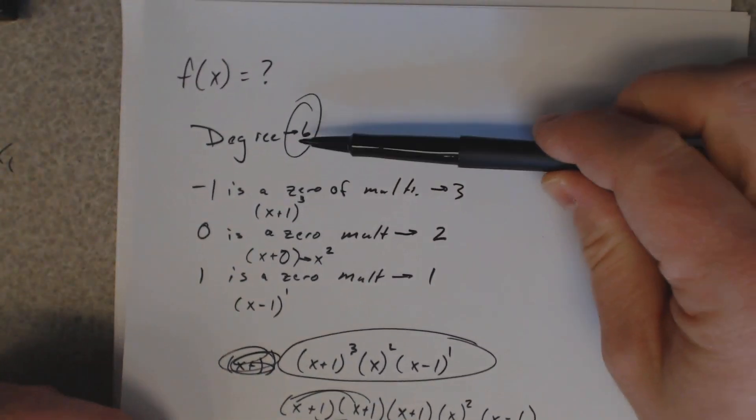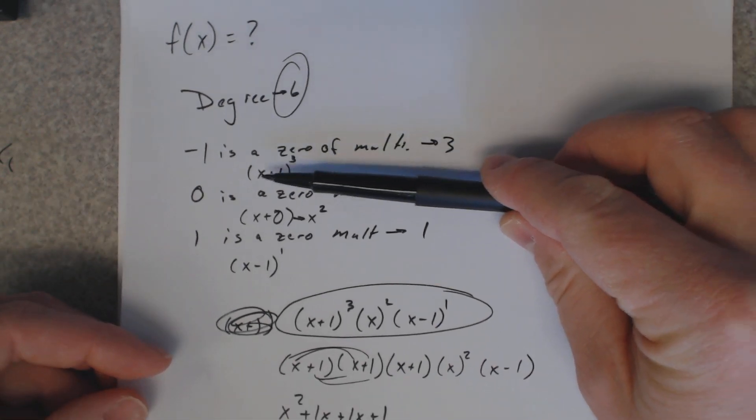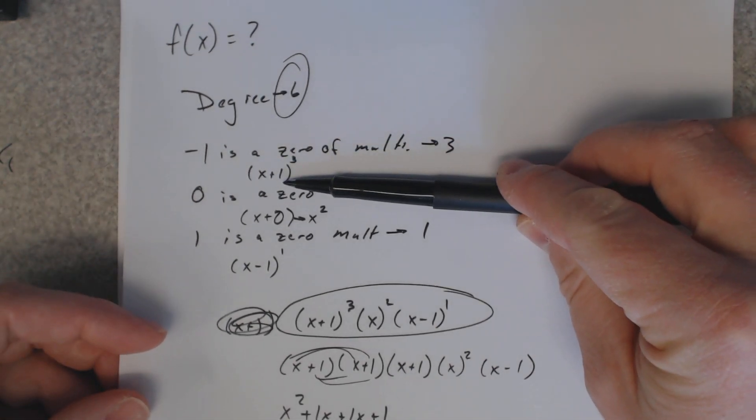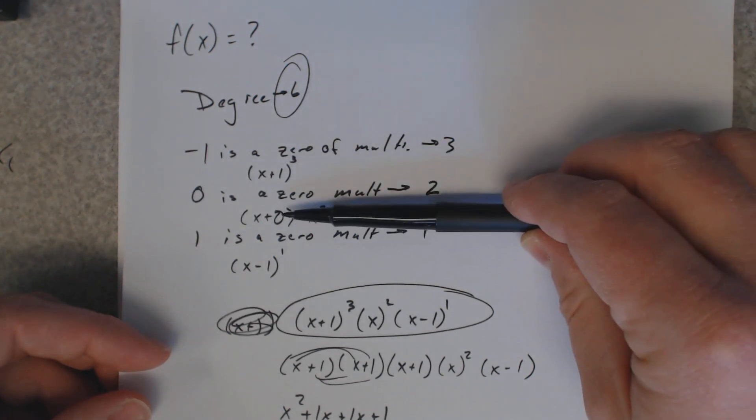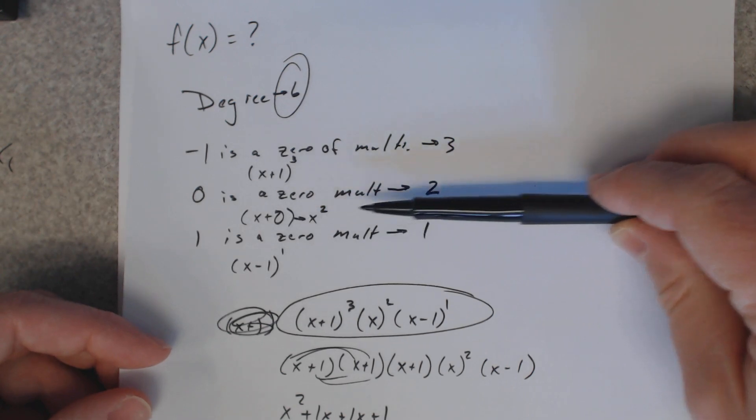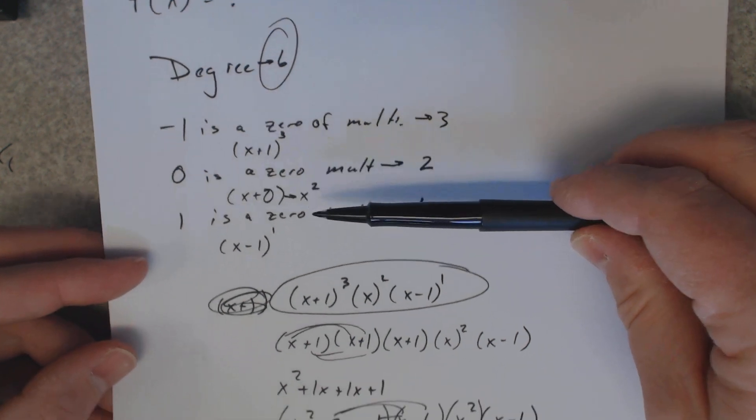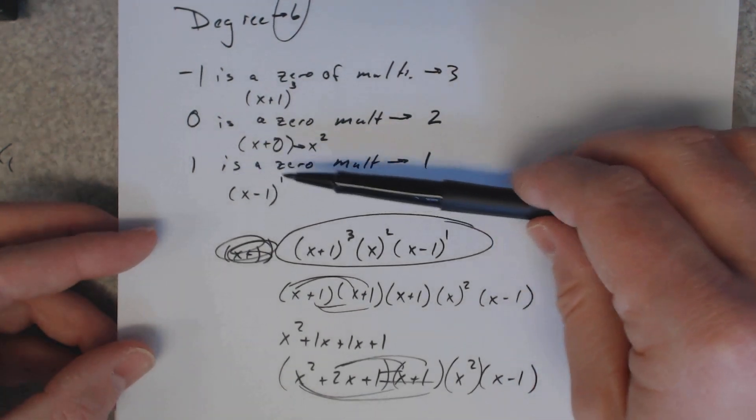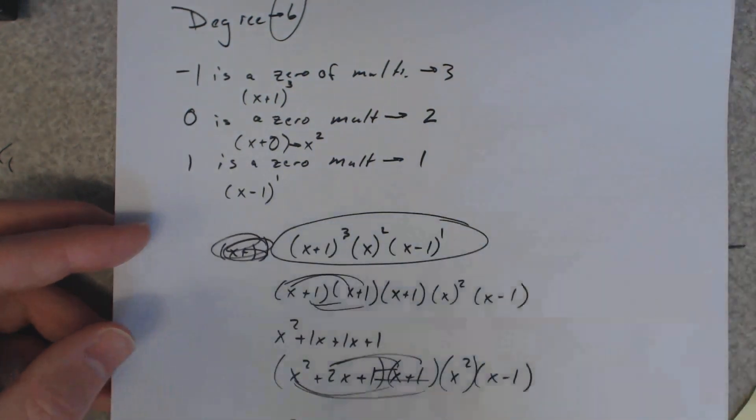Okay, so to recap: they said the degree is 6, that means I have 6 factors. Negative 1 is a zero, so x plus 1 is a factor. It has a power of 3 on it because its multiplicity is 3. When 0 is a zero, it's just a plain x, it's a factor, and it has a squared on it, it happens twice. And then when 1 is a zero, you say x minus 1 is a factor. The multiplicity is 1, so you put the power of 1 on it.